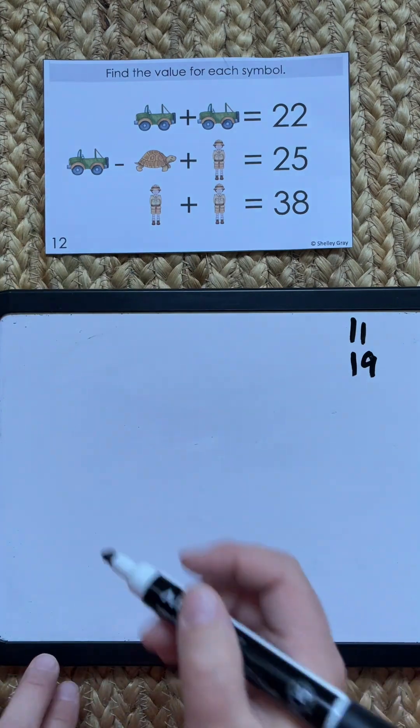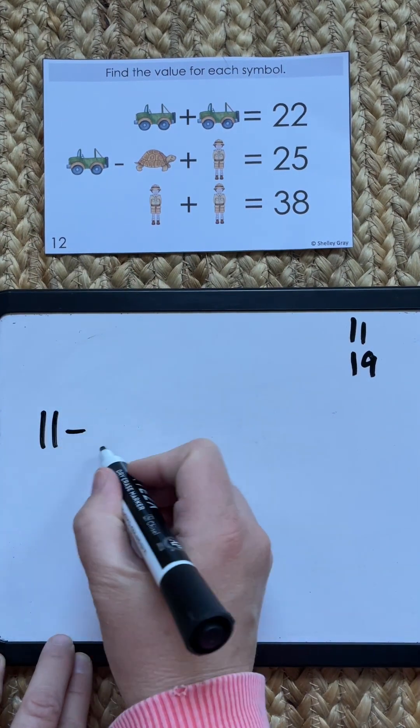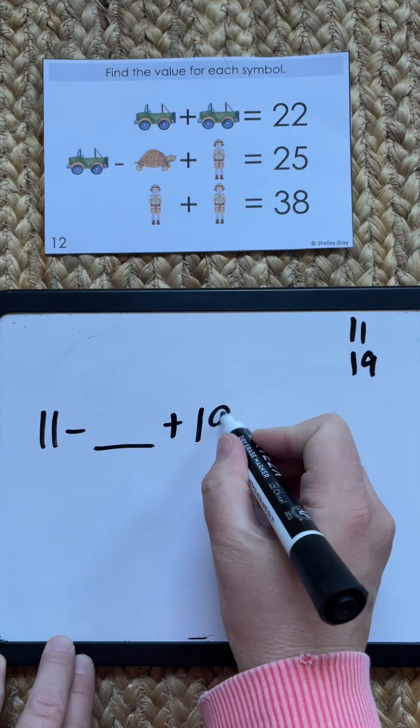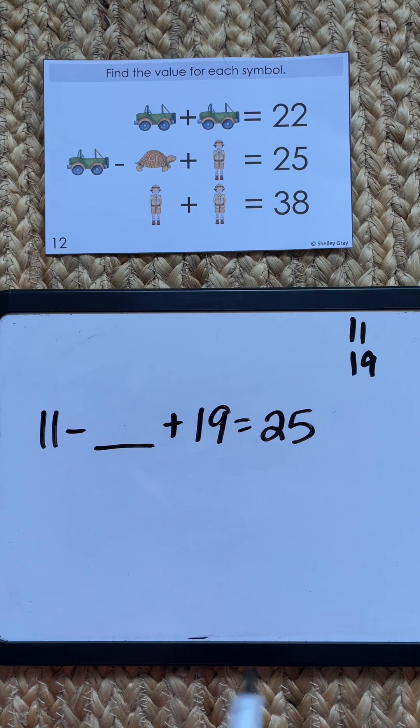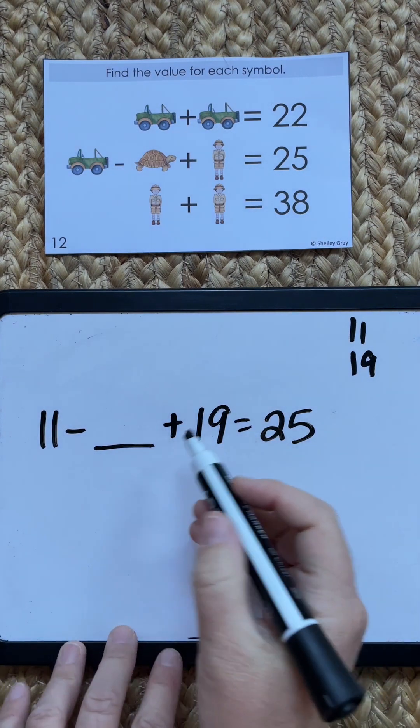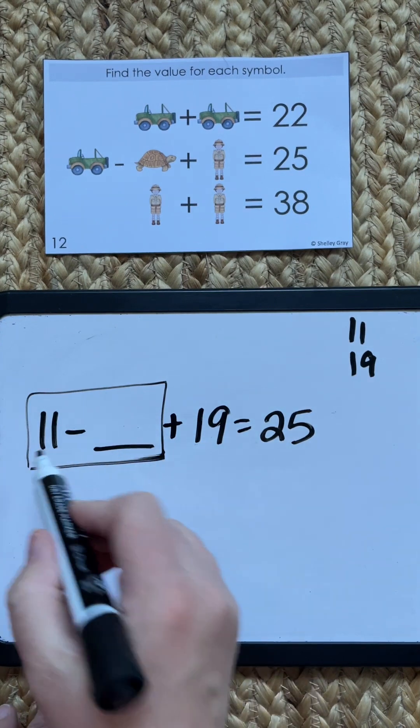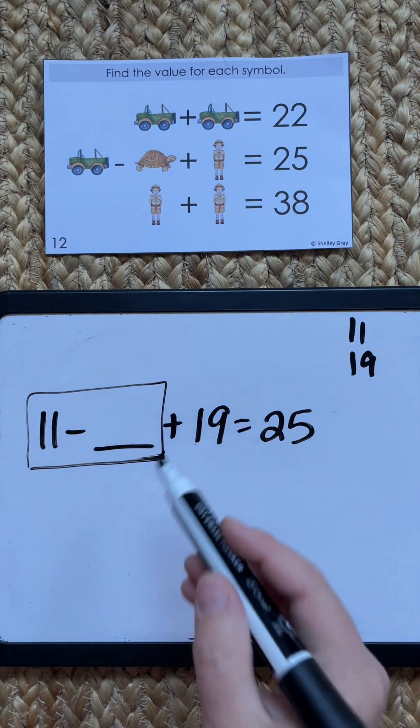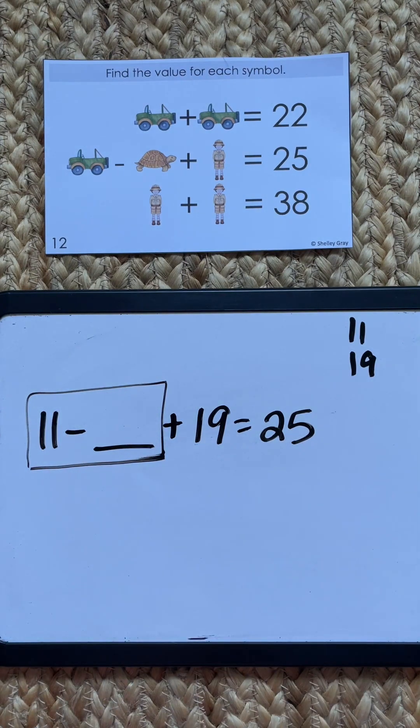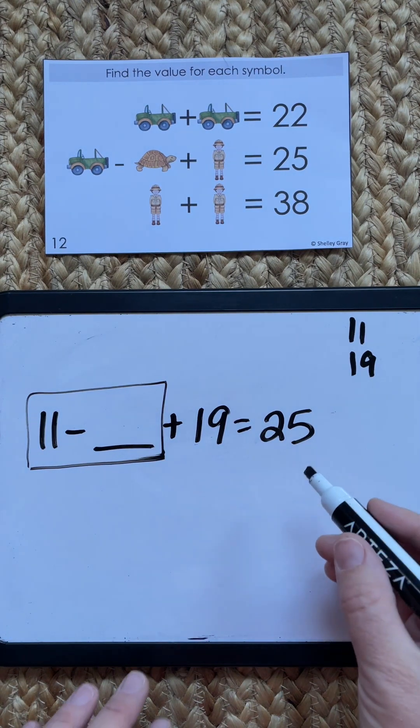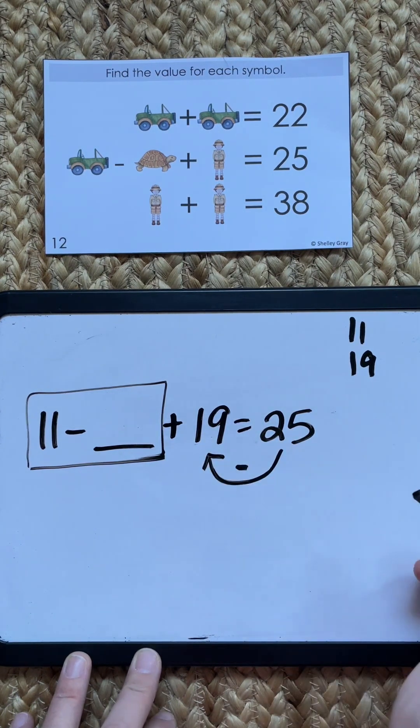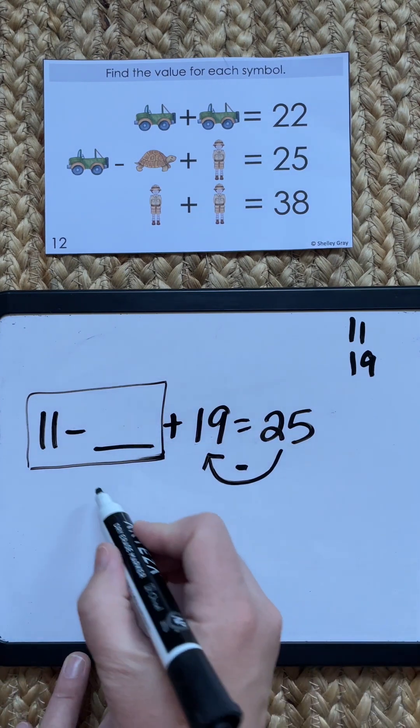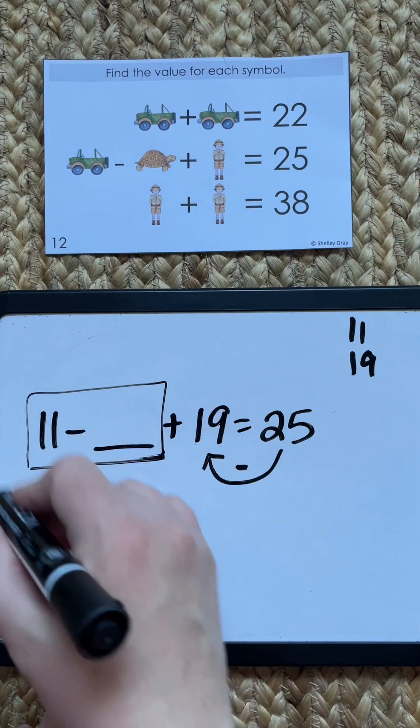Okay, so now we've got to solve that middle row. So we know that 11 subtract something plus 19 equals 25. Okay, this type of question is really - it can be very confusing for kids. So here's what I like to tell them. I like to say, let's pretend that this has just one value. Okay, let's just try to figure out the value of that big rectangle first. So using inverse relationships, we know that we could do 25 subtract 19, which gives us 6. So we know that the value of this rectangle has to be 6.